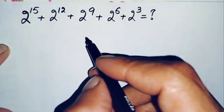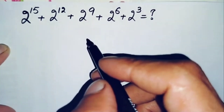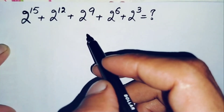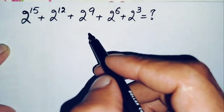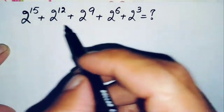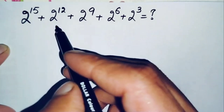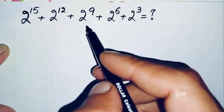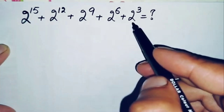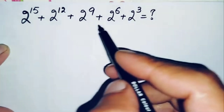Hello everyone, welcome back to Math Explorer. In this video I'm going to solve and find the value of this nice and interesting simplification math problem, which is 2 raised to power 15 plus 2 raised to power 12 plus 2 raised to power 9 plus 2 raised to power 6 plus 2 raised to power 3.